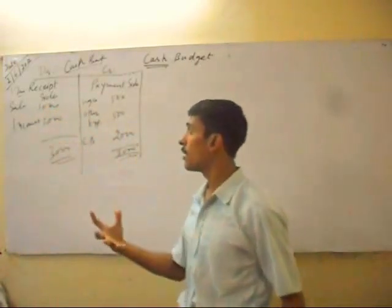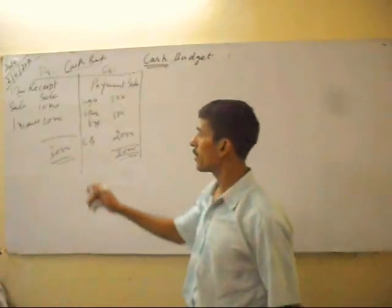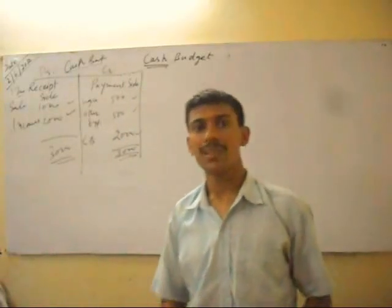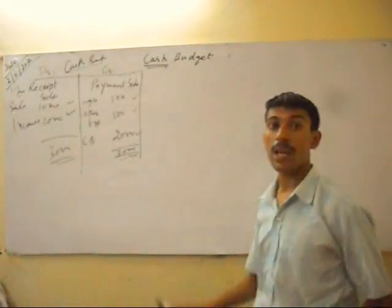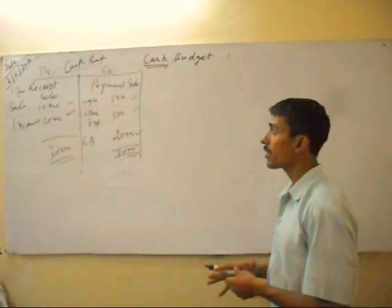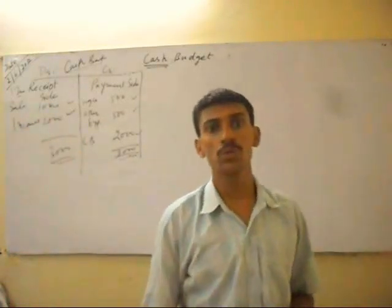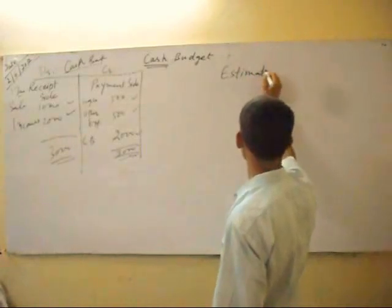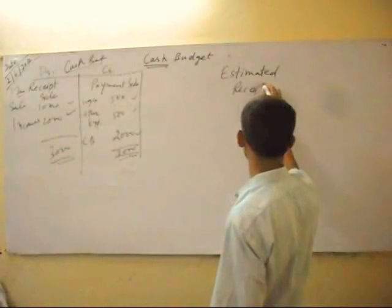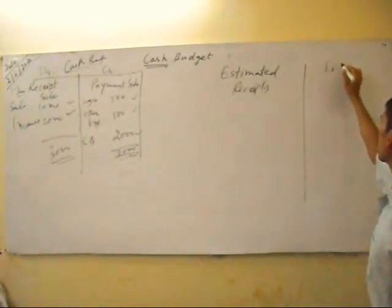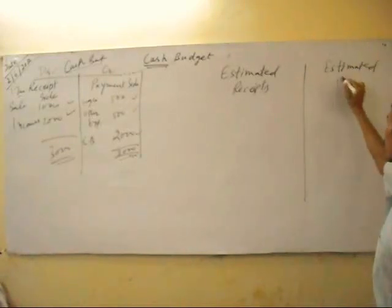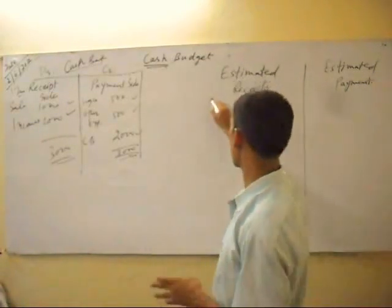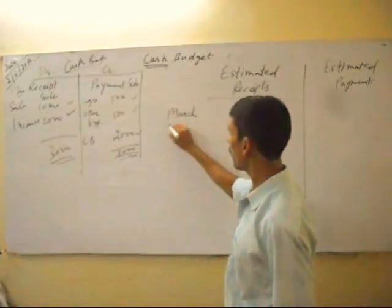Our sales income is one thousand and other income is two thousand in cash form, and payments are these. But in cash budget, we have to estimate and show the data on the basis of past sales. These are estimated receipts and estimated payments.